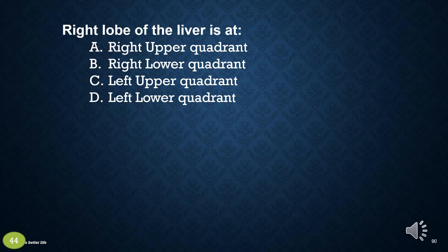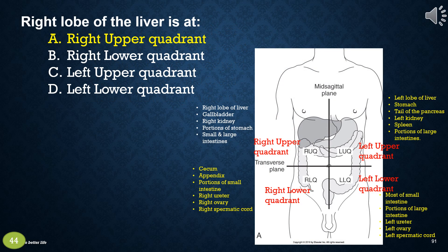Right lobe of the liver is at: a. Right upper quadrant, b. Right lower quadrant, c. Left upper quadrant, or d. Left lower quadrant. The right lobe of the liver is at a, right upper quadrant.